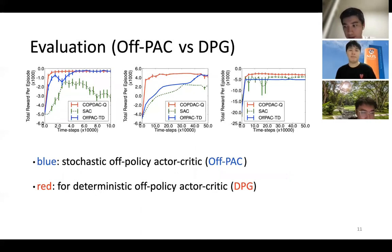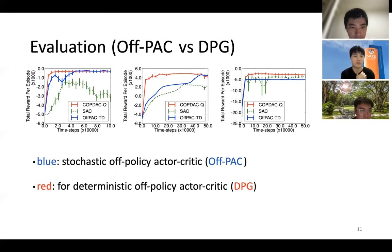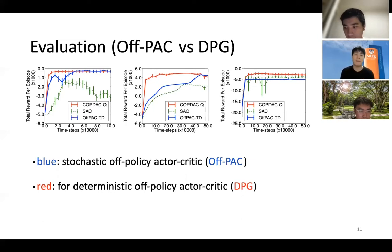Here are the experiments performed in the paper. There are three experiments, all conducted under continuous action variants as standard reinforcement learning benchmarks. We focus on the blue and red dots — blue is stochastic off-policy actor-critic and red is deterministic off-policy actor-critic. Generally, compared with the stochastic policy, the deterministic policy gets a higher amount of rewards, converges faster, and with more stability.